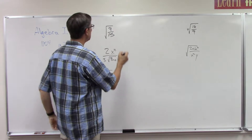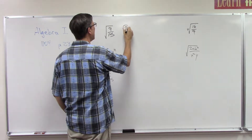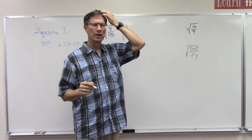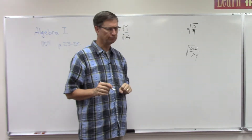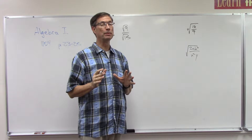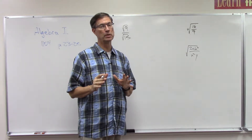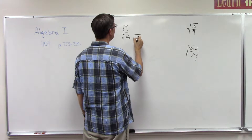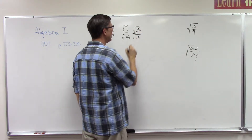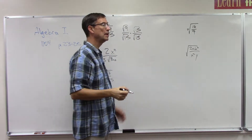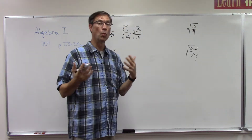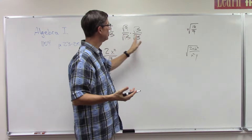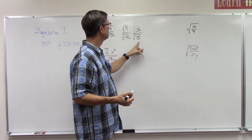Let's take a problem. The first step is always to separate the top from the bottom — they're both still under the radical. Then here's the easy step: just multiply by whatever the denominator is, the radical of the denominator, because that's what we have to get rid of. So if I do square root of 15, I do the same thing on both sides. Remember, I can multiply by anything over itself, and that's one — anything divided by itself is one — so I haven't really changed the value, just its appearance.